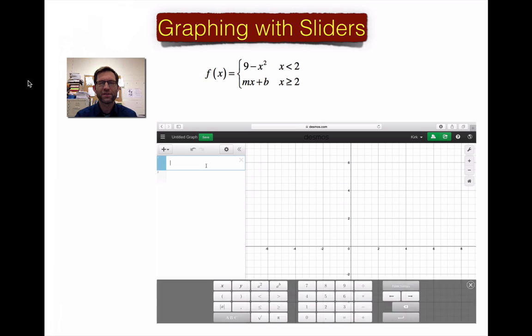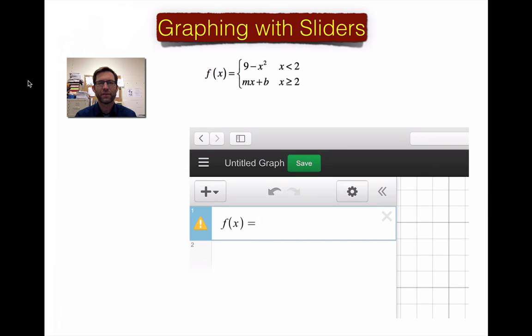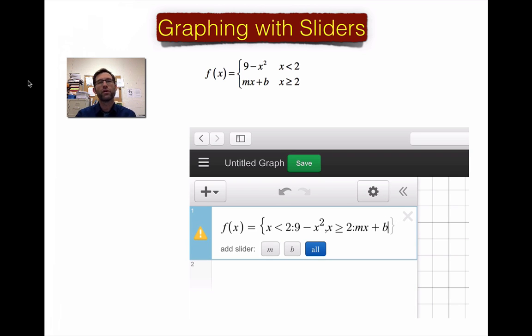Let me put in f(x) equals, and I'm going to put that funny bracket. Now, I have to put the interval in first, so I'm going to put in x less than 2. Then I'm going to put in colon. Then I'm going to type in the formula 9 minus x squared. So that's the first formula. Now, remember, I separate the formulas and intervals by commas. So I'm going to put a comma there. And now the next interval, x is, go to the Desmos keyboard, greater than or equal to, 2, colon, mx plus b. Now, notice, before I even put in the final curly bracket, it's already asking me if I want to add sliders for m and b. I can do that now, or I can put in the final curly bracket, which I'm going to do. And now I'm going to hit all.